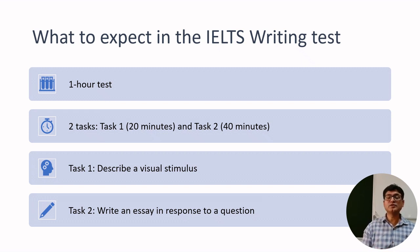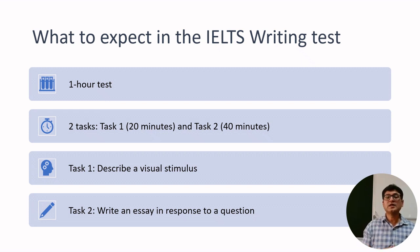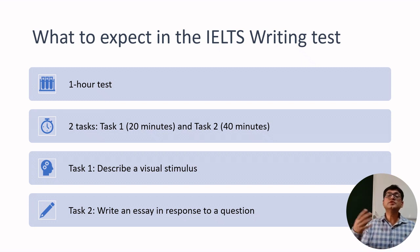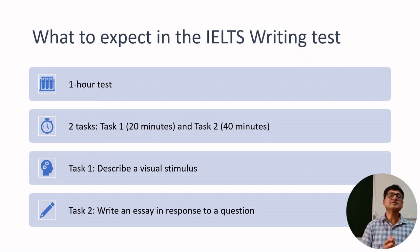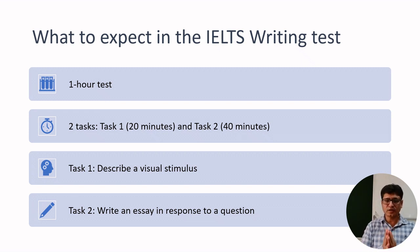In IELTS Writing Task 1 you will be given visual information — it can be a pie chart, a graph, a table, a map, or a flow chart. You have to convert that visual information into words and sentences. We'll talk about how effectively that needs to be done.